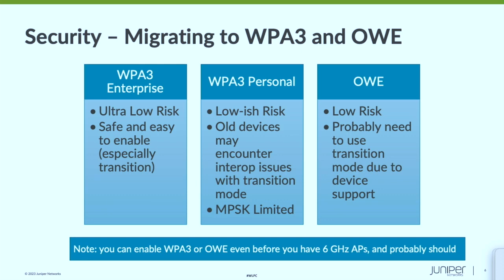When thinking about adopting 6 GHz, you first have to think about WPA3 and OWE — there's some nuance to the different security types. WPA3 Enterprise is very easy to adopt; if you're not doing it already, turn it on. You'll very likely encounter no issues, especially if you do transition mode. WPA3 Personal is low-ish risk, but we have seen some interop issues especially with transition mode. Older Android clients and the original Microsoft Surface really just don't like WPA3 transition at all. This may be where you think about doing a separate 2.4/5 SSID for older devices that don't have WPA3 support, and then a pure WPA3 on 5-plus-6.